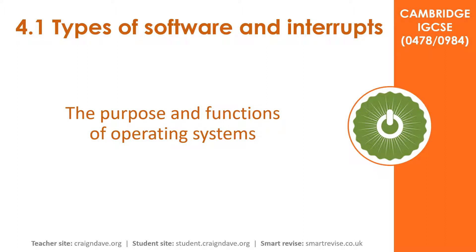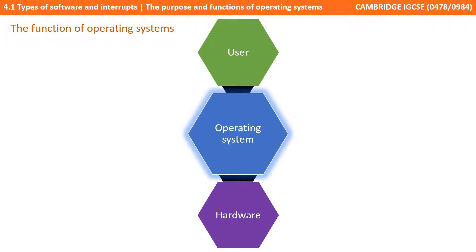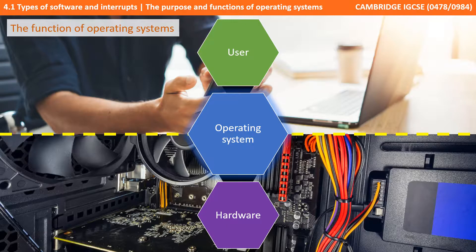In this video we discuss the need for operating systems and their function and purpose. We know that all computer systems input data, they process that data, and they output a result. Quite often this process involves a user that provides that data, and the output is produced by some hardware, whether that's a display or a printer. So the user needs a way of interacting with that hardware, and that's the purpose of an operating system — it provides the interface between the user and the hardware.